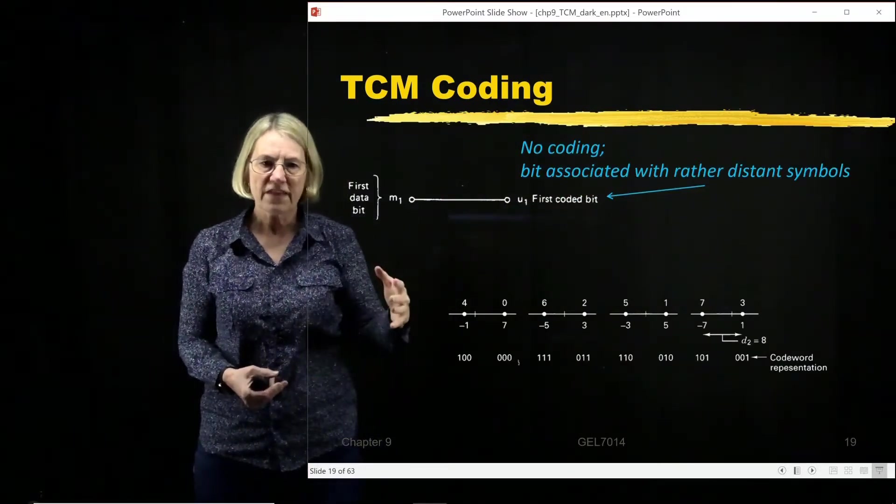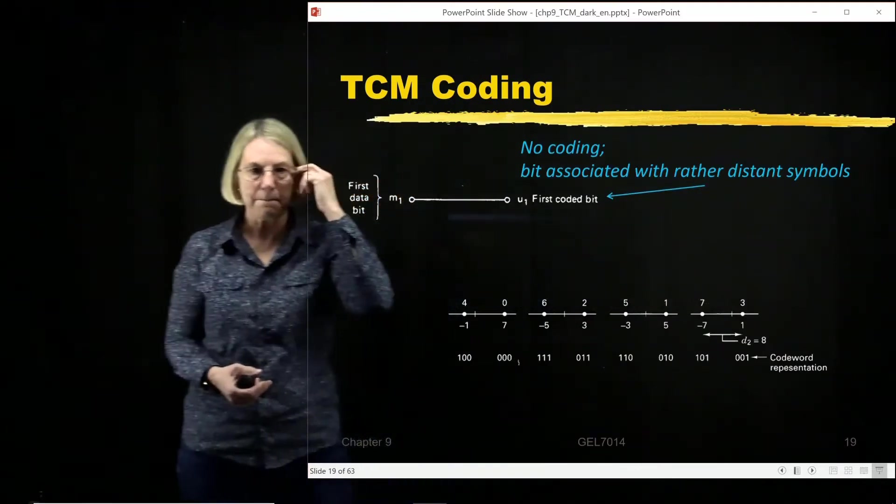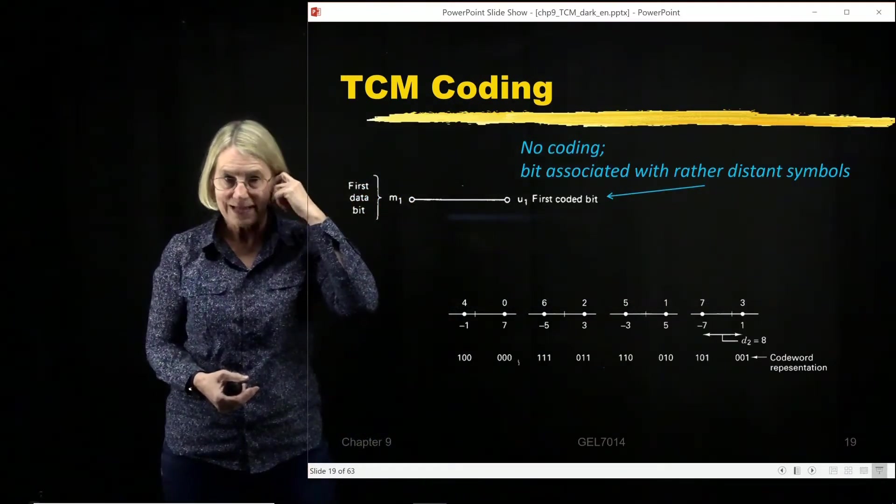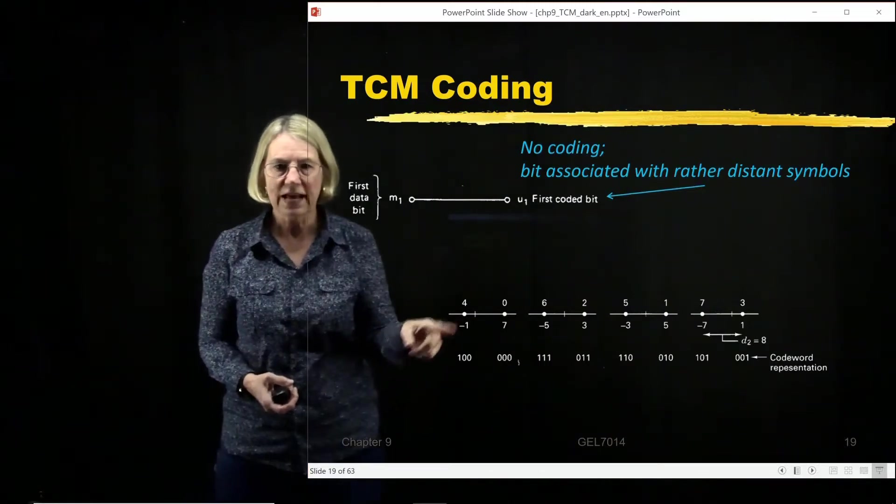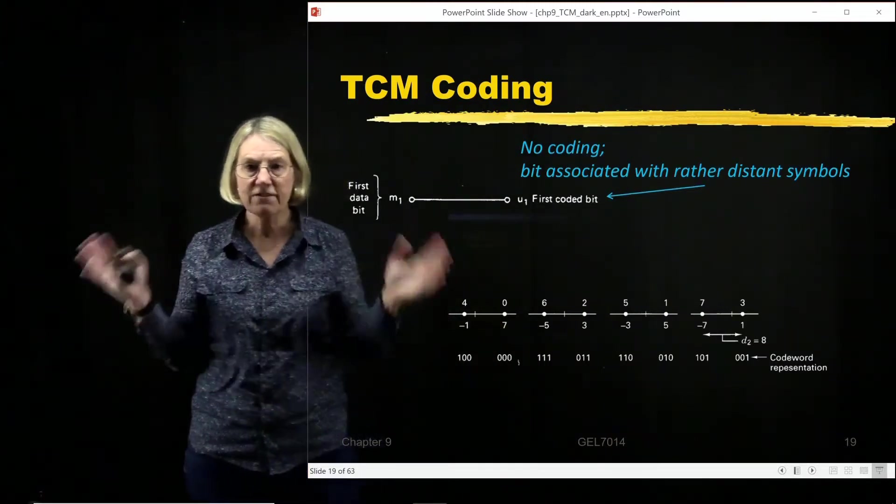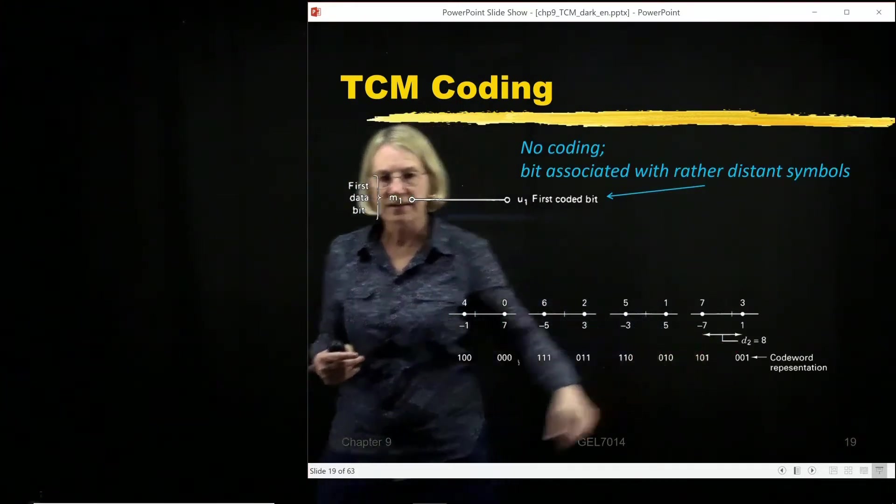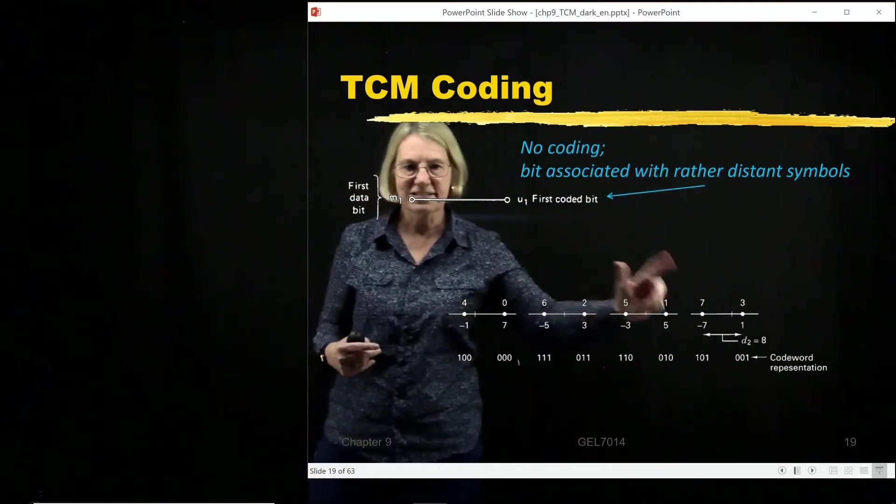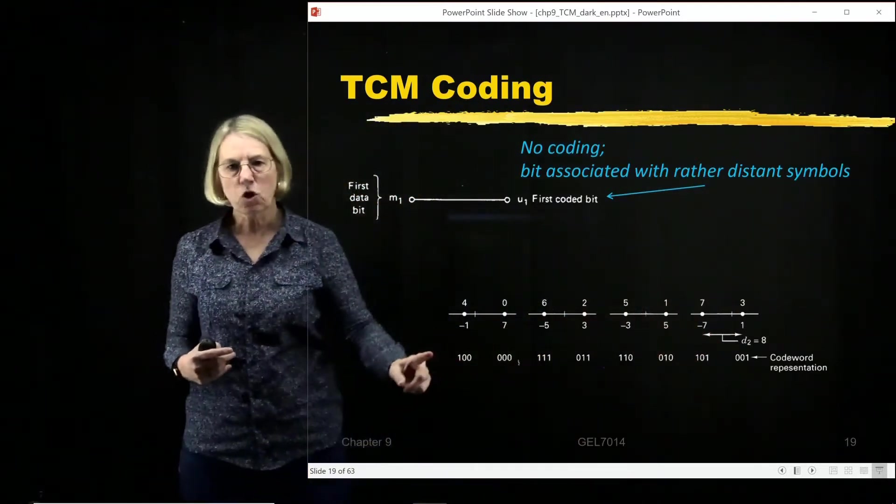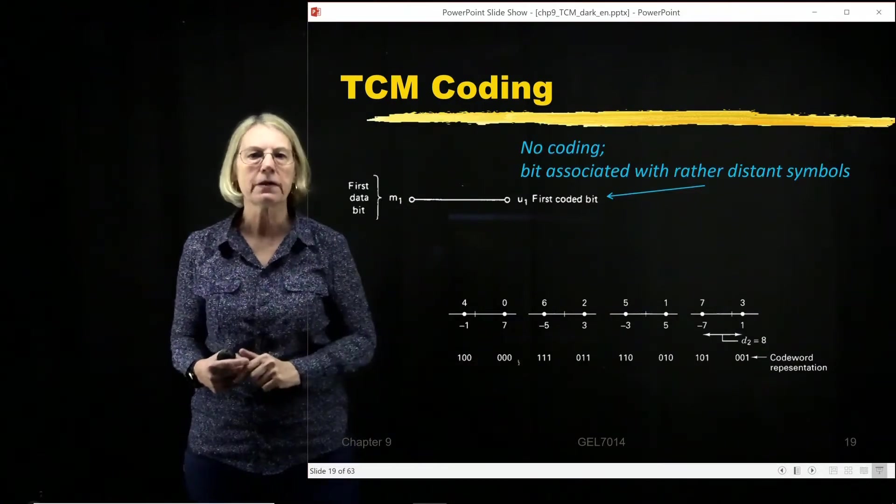So we saw that here in our 8-PAM example with the bit allocation that we saw here. And the minus 1 and the 7 are very far apart. They have a distance of 8. And all these pairs which are at a distance of 8 from one another, the first bit is going to be the bit which is not going to be coded.